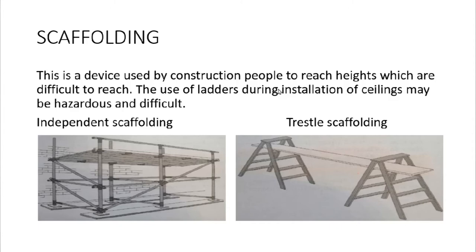Scaffolding is a device used by construction workers to reach heights that are difficult to reach. The use of ladders during ceiling installation may be hazardous and difficult. There are two types: independent scaffolding and trestle scaffolding. Independent scaffolding sometimes comes with wheels, so you don't have to get down when moving to a different position — an assistant can slide it to the next position.